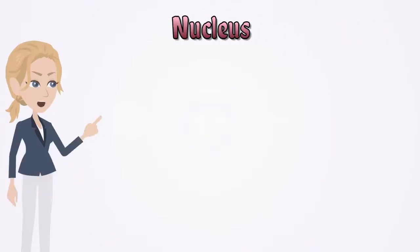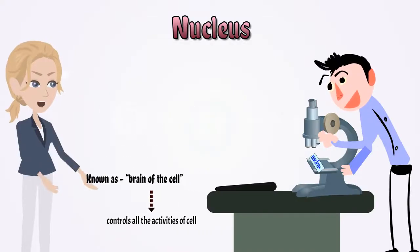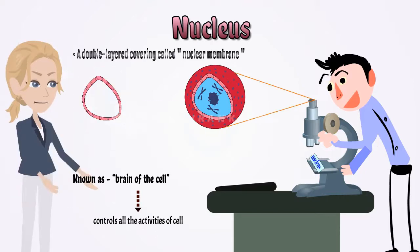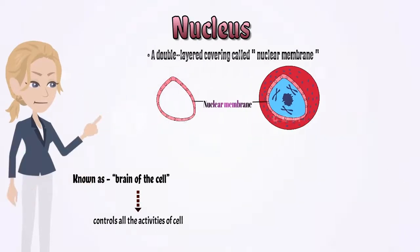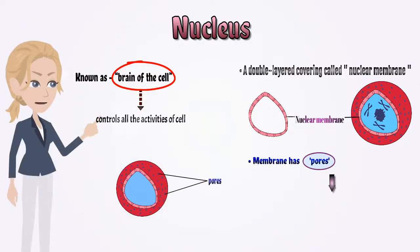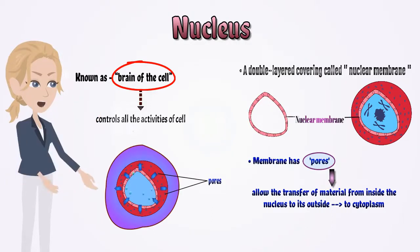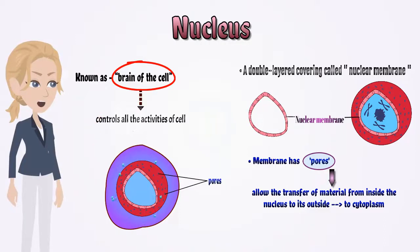Nucleus, it is known as the brain of the cell as it controls all the activities of cell. If we examine a nucleus under a microscope, we found a double layered covering called nuclear membrane. The membrane has pores, which allows the transfer of material from inside the nucleus to its outside, that is to the cytoplasm. The nucleus contains chromosomes.